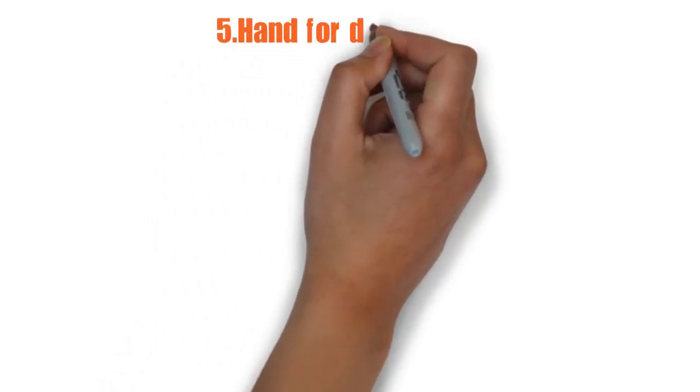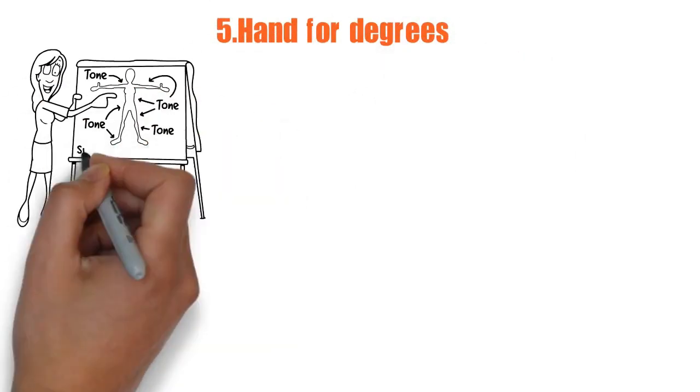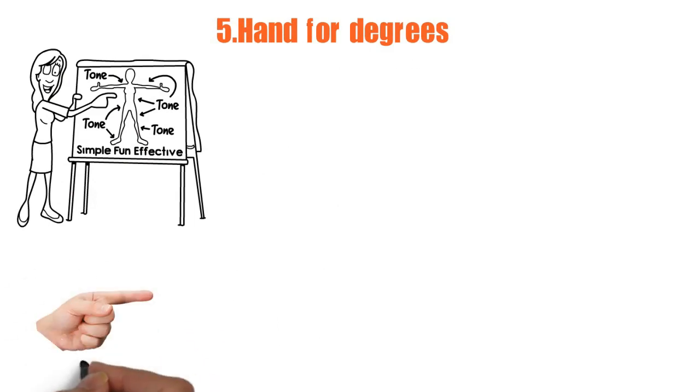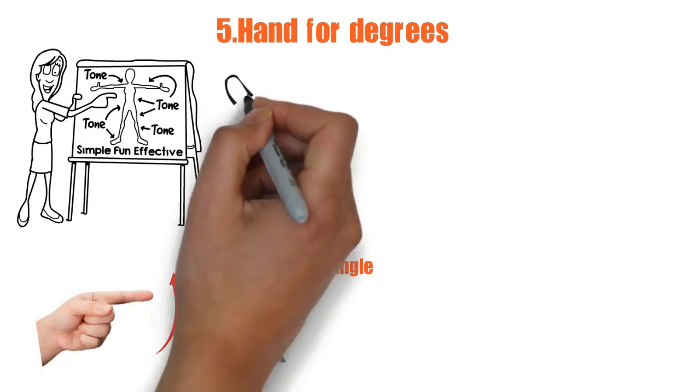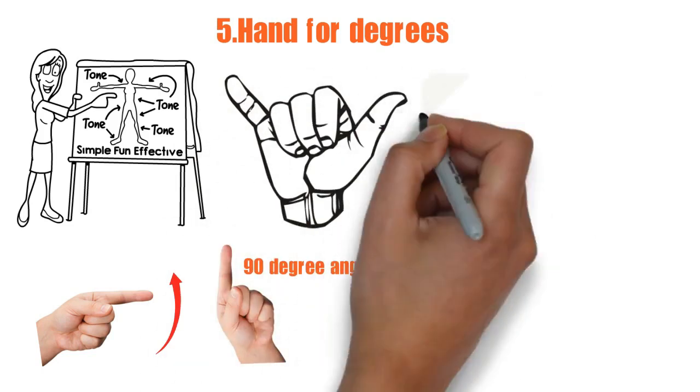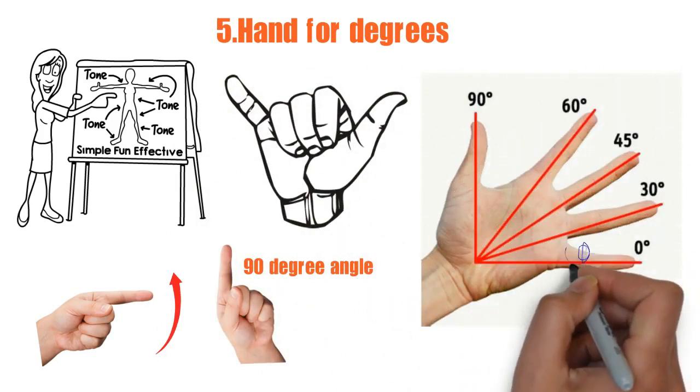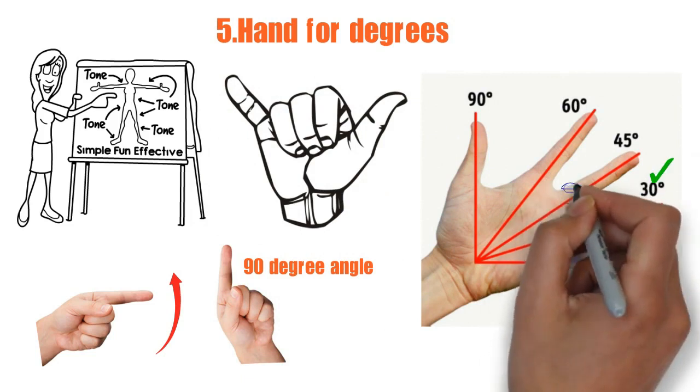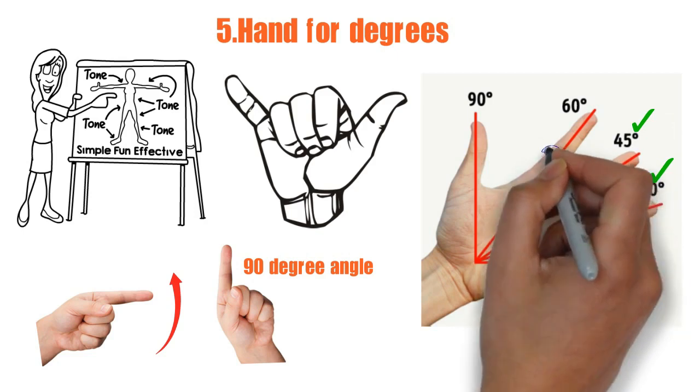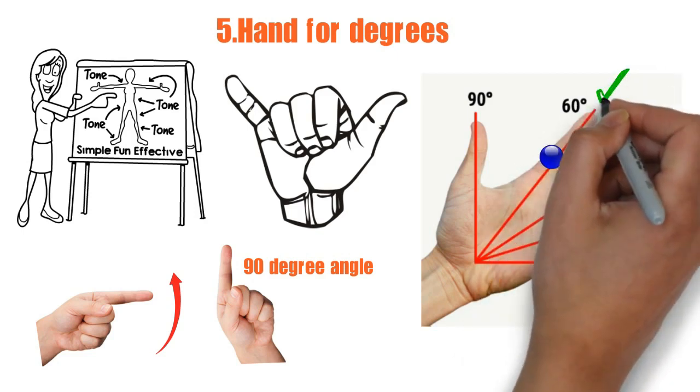5. Hand for degrees. If you need a quick reference guide for degrees, you can use your hand. Take your hand and form a 90-degree angle from thumb to pinky. If you spread your fingers out just slightly, then you have: pinky to ring finger 30 degrees, pinky to middle finger 45 degrees, and pinky to forefinger 60 degrees.